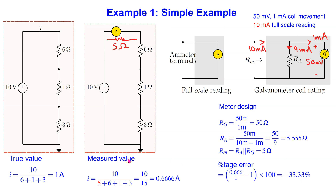This is because in this example, the effective ammeter resistance is 5 ohm and is quite comparable to the other resistances in series with it. Thus the ammeter disturbs the circuit by quite a lot. Note that in general, the percentage error can be positive or negative. In this example, it is negative because the measured value is less than the true value.